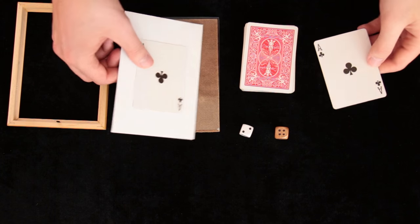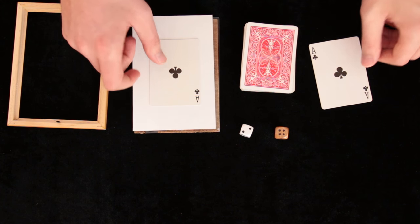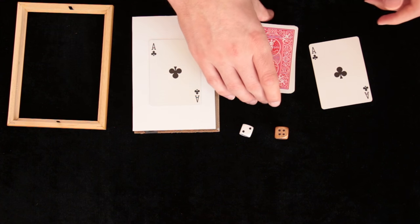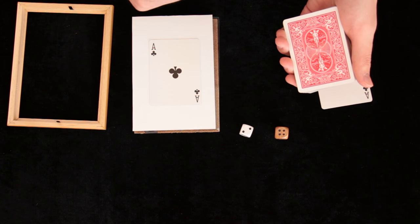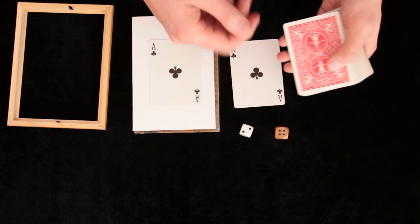For this trick we need a few things, first of all it is a duplicate card and we need to know how to force a card to the spectator. The method I used in the performance is very easy, I will show it to you right now.